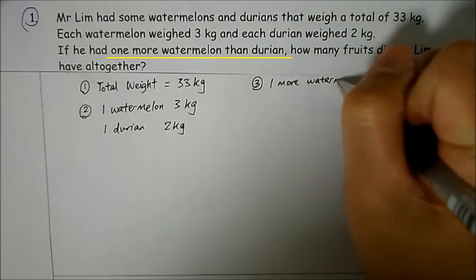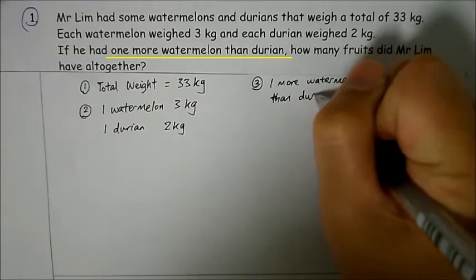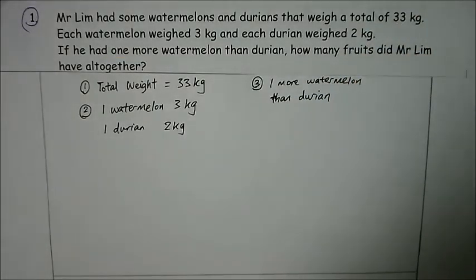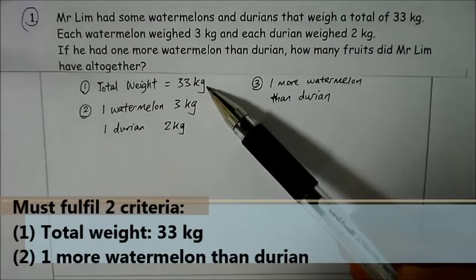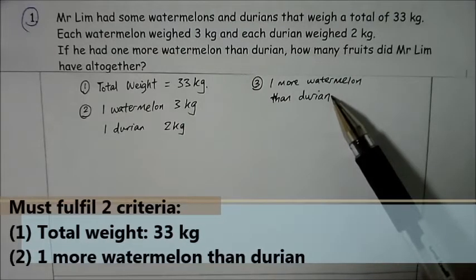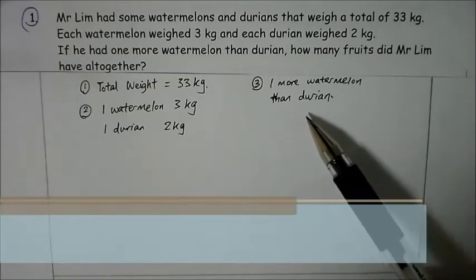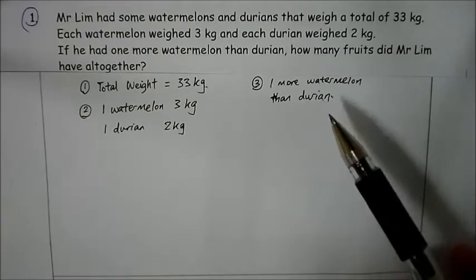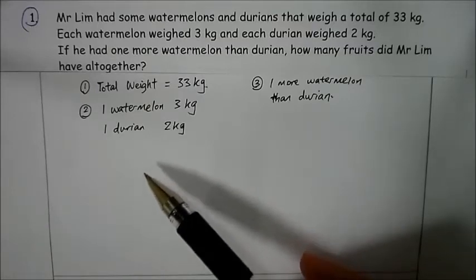Now let me explain why we use the guess and check method. We are given two criteria: number one, the total weight of the watermelons and durians must be 33 kg, and number two, there is one more watermelon than durian. These are the two criteria that must be fulfilled in order to solve the question. The information about the weight of one watermelon and one durian helps us solve the question using the guess and check method.